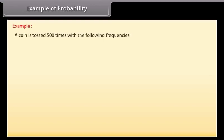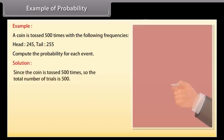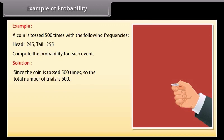Example: A coin is tossed 500 times with the following frequencies: Head 245, Tail 255. Compute the probability for each event. Solution: Since the coin is tossed 500 times, the total number of trials is 500.